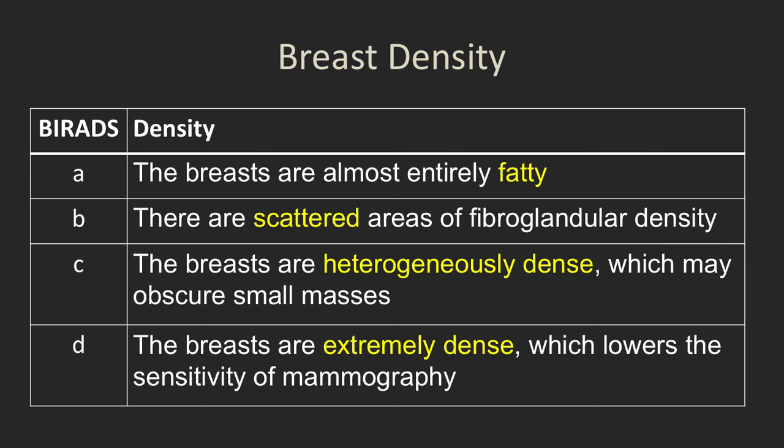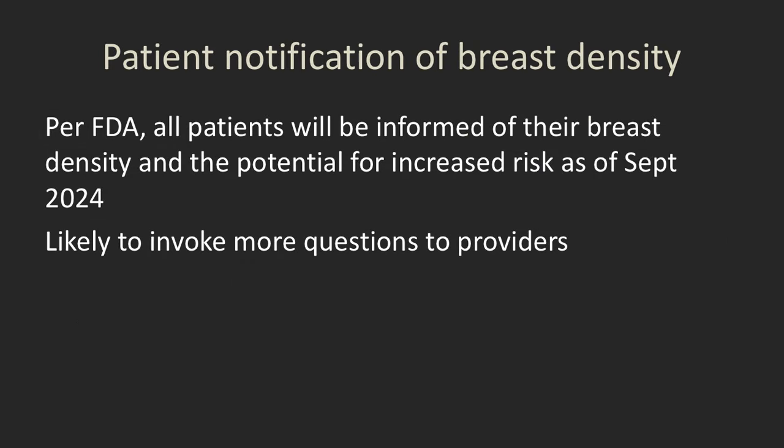The other important terminology is breast density, split into four categories: fatty, scattered, heterogeneously dense, and extremely dense — sometimes called BI-RADS A, B, C, and D. As of September 2024, per FDA ruling, all patients will be informed of their breast density and the potential for increased risk. This is going to invoke a lot more questions to providers as these patients become concerned about what they need to do.